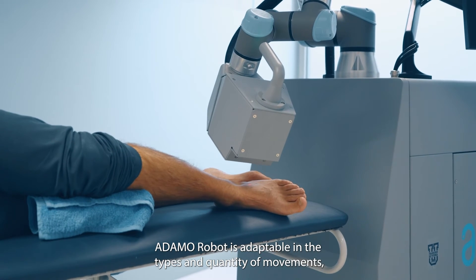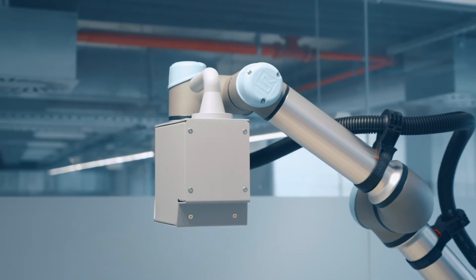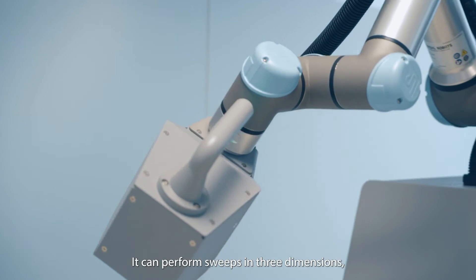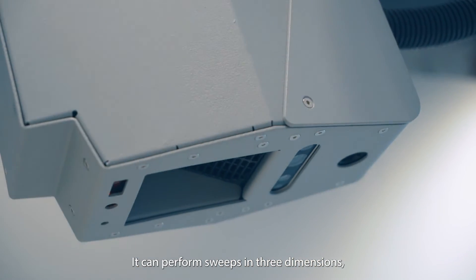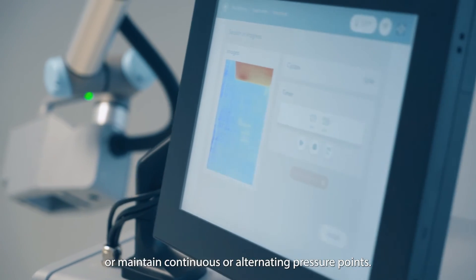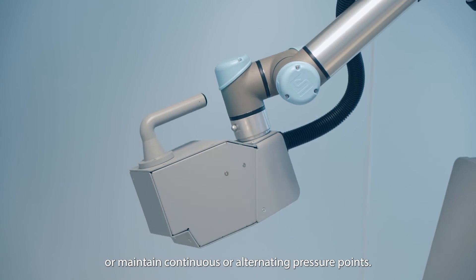Adama robot is adaptable in the types and quantity of movements which are not replicable by other devices. It can perform sweeps in three dimensions with linear or pendulum-like directions or maintain continuous or alternating pressure points.